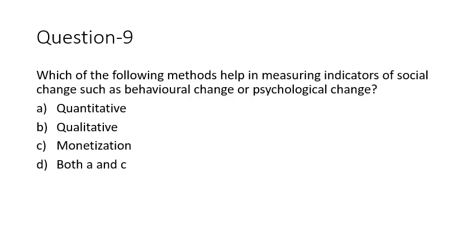Question nine: which of the following methods helps in measuring indicators of social change such as behavioral change or psychological change? These are not easy to gauge. This can be done through the qualitative method. The answer is B — qualitative method.